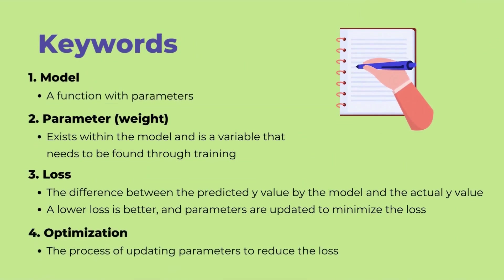Finally, let's review the terms that came up in this section. A model refers to a function with parameters, or weights. Parameters, or weights, are values that need to be found through learning. Loss refers to the difference between the predicted Y values and the actual Y values. A lower loss is better, and updating the parameters to reduce the loss is the meaning of the model learns. The process of updating the parameters to reduce the loss is called optimization.